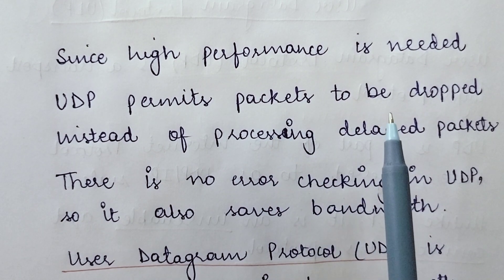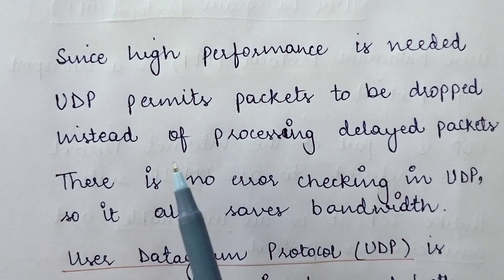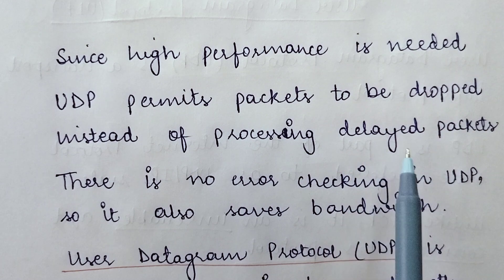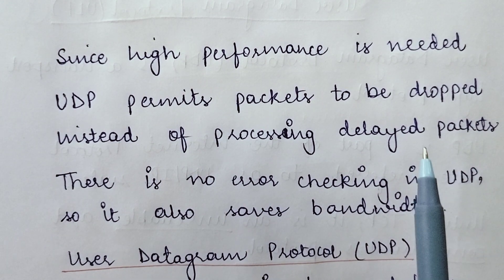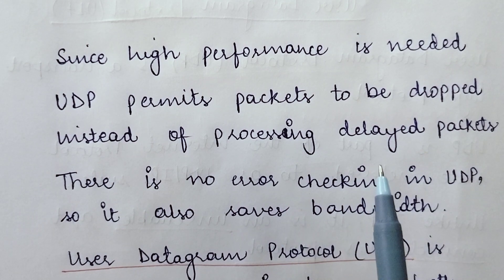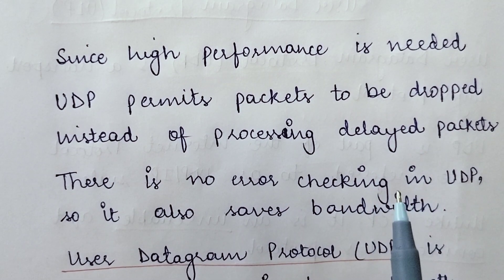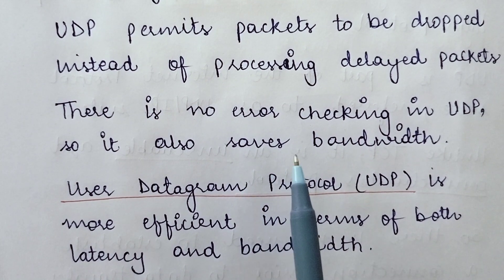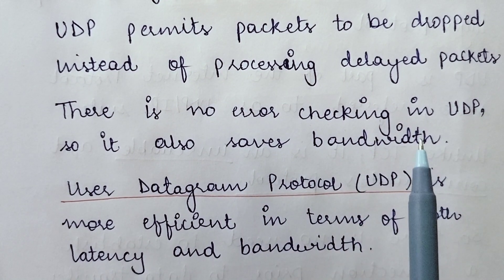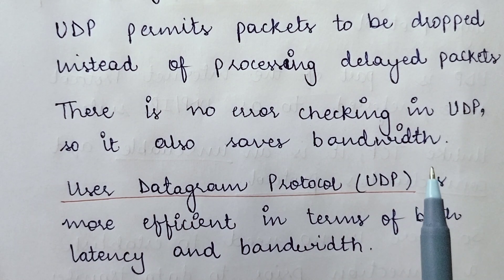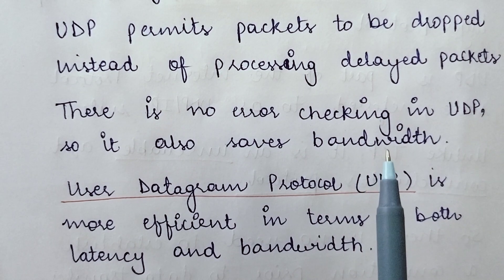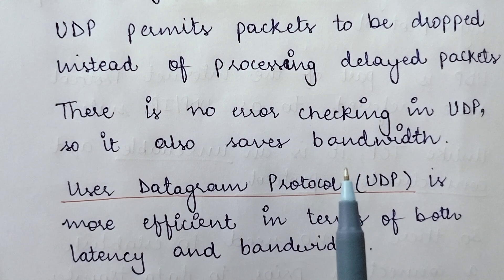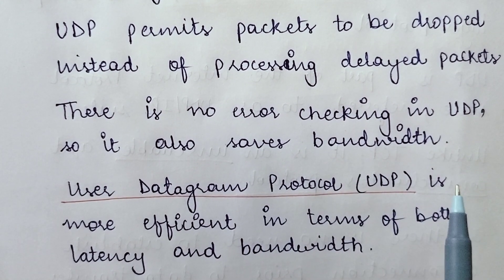Since high performance is needed in real-time services, UDP permits packets to be dropped instead of processing delayed packets. Rather than wasting time on delayed packets, UDP simply drops those packets, saving a lot of time. There is no error checking in UDP — it is less reliable compared to TCP. When I say less reliability, that means you do not count on UDP for checking errors.